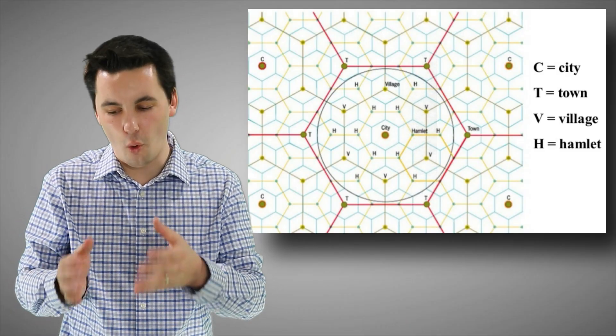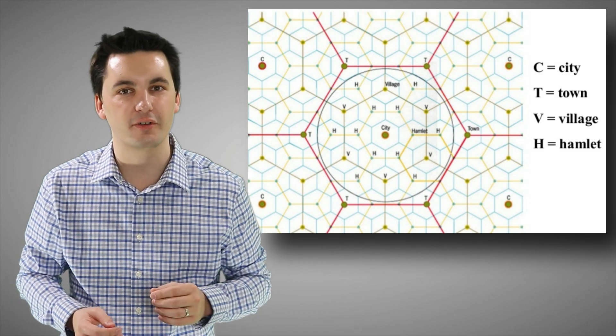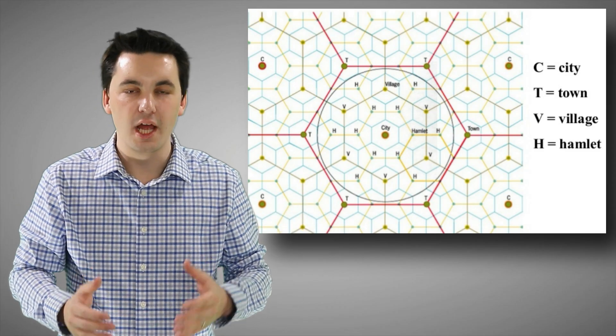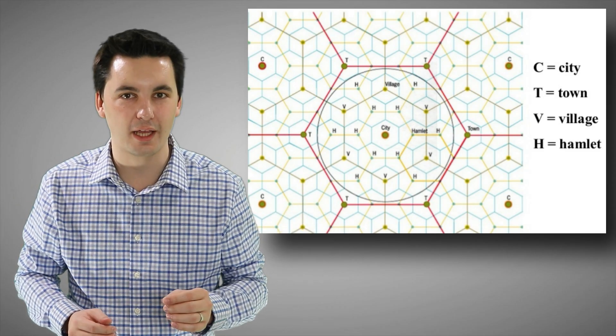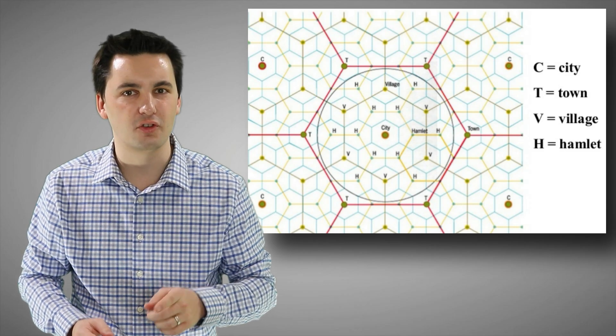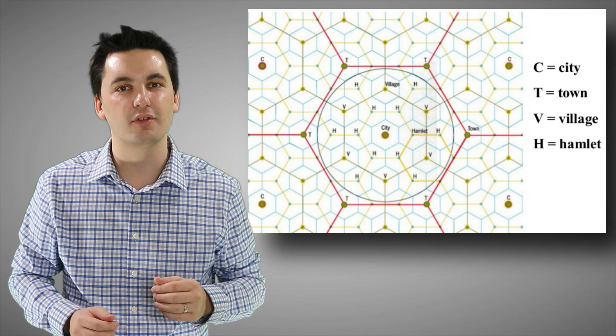But now we're going to move into the distribution of them. We're going to look at the distribution of goods and services and settlements, as we talk about Christaller's central place theory. The central place theory uses hexagons in order to illustrate the spatial layout and distribution of different goods and services and settlements. We can see that larger settlements have a larger pull factor. This allows them to have a larger range. And that's because they offer more goods and services, and have more opportunities. We talked about this in the gravity model. And now the same goes for goods and services as well.